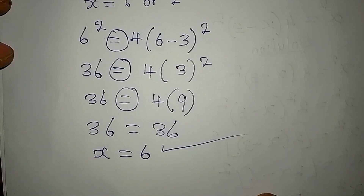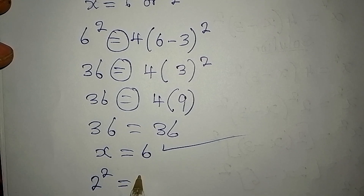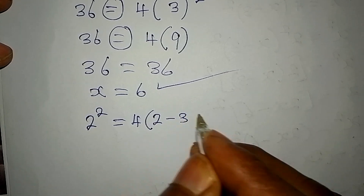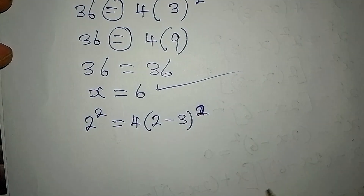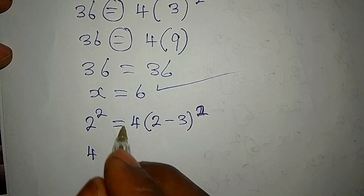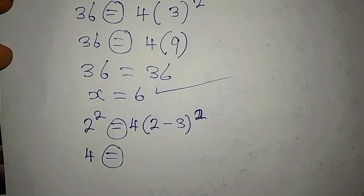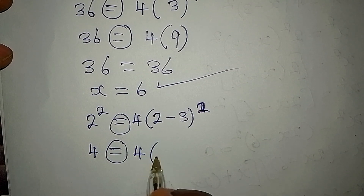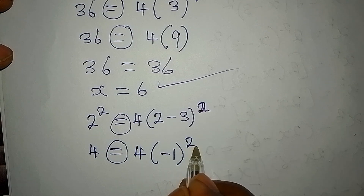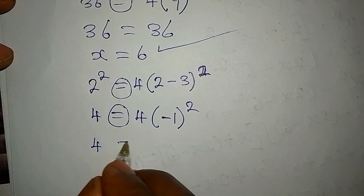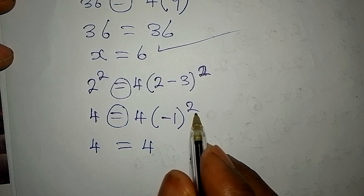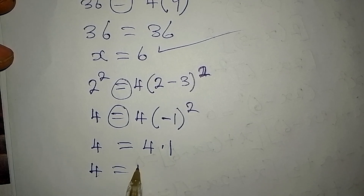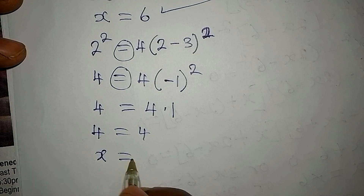Now let's work with x equals 2. In place of x squared I write 2 squared, equal to 4 into bracket 2 minus 3, squared. Now 2 squared is 4. On the right, 2 minus 3 is minus 1, so we have 4 times minus 1 squared. Minus 1 squared gives 1, and 4 times 1 is 4. So 4 equals 4, confirming x equals 2 also satisfies the equation.